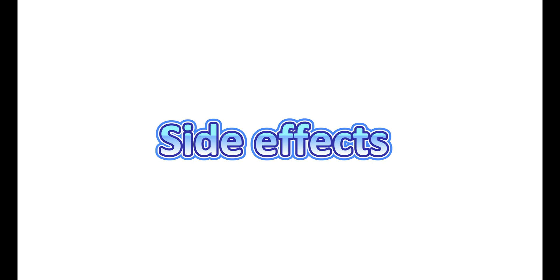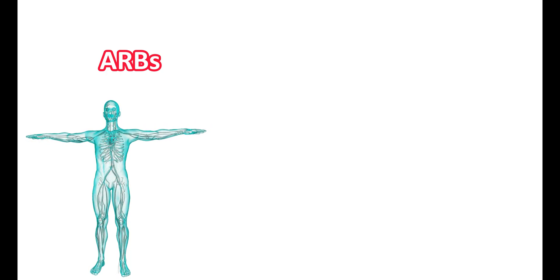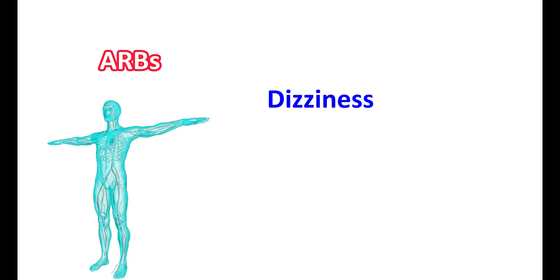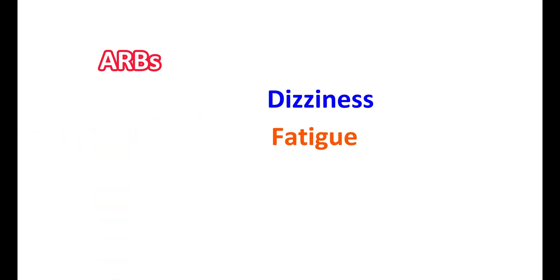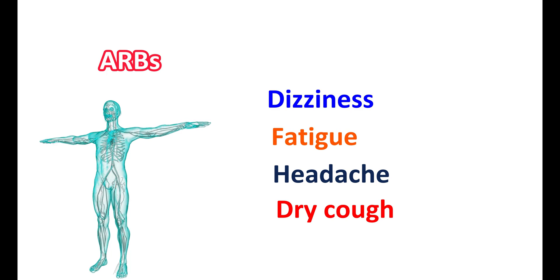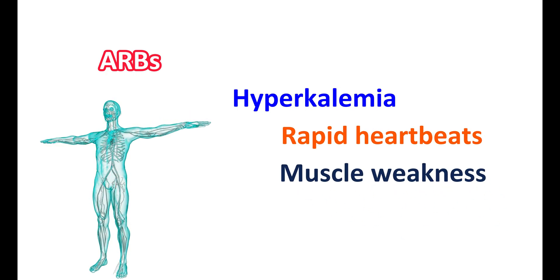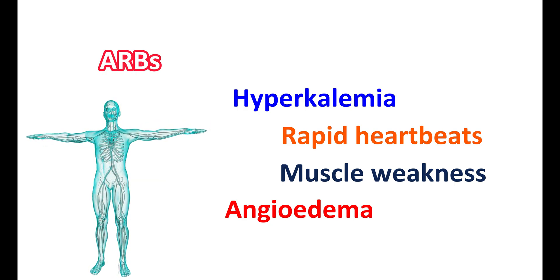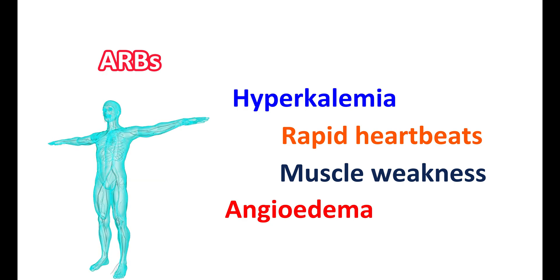The side effects of ARBs mainly relate to their vasodilatory action. They can produce dizziness and lightheadedness, which can be observed even with the first dose. Fatigue and headache are also common side effects. Even though rare, ARBs can produce dry cough due to accumulation of bradykinin, though this is more pronounced with ACE inhibitors. ARBs can also increase potassium levels, leading to hyperkalemia, which may cause rapid heartbeats and muscle weakness. Hypersensitivity reactions like angioedema may also occur, causing swelling of the face, tongue, and throat, though this is less pronounced than with ACE inhibitors. Hypotension is another important side effect, more pronounced in people with volume depletion.